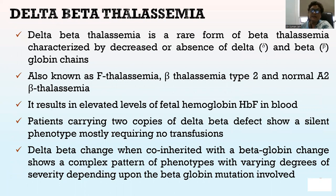Delta-beta-thalassemia is a rare form of beta-thalassemia characterized by a decreased or absence of delta- and beta-globin chains, also known as F-thalassemia, beta-thalassemia type 2, and normal A2 beta-thalassemia. It results in elevated levels of fetal hemoglobin in the blood. Patients carrying two copies of the delta-beta defect show a silent phenotype, mostly requiring no transfusions. When co-inherited with beta-globin chain mutations, it shows a complex pattern of phenotypes with varying degrees of severity.